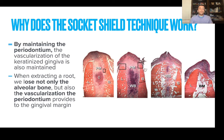By maintaining the periodontium, the vascularity of the keratinized gingiva is also maintained. When we extract a root, we lose not only the alveolar bone but also the vascularity of the periodontium that provides nourishment to the gingival margin.